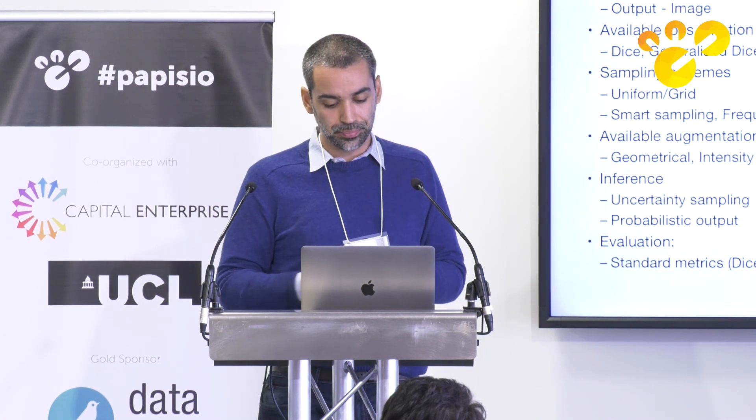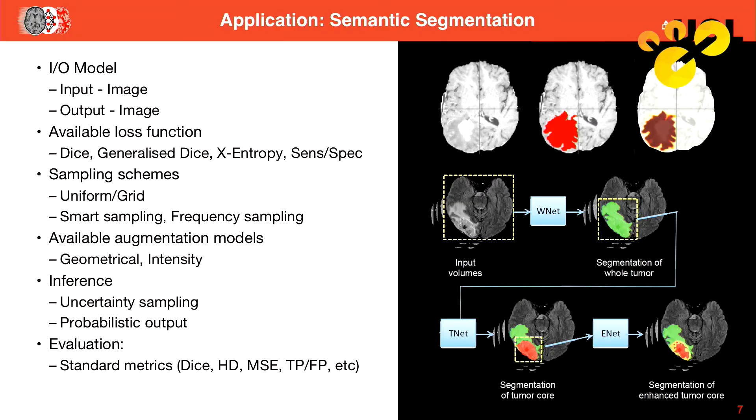For semantic segmentation, your input is an image and your output is an image. In terms of loss functions, you have things specific to medical imaging like DICE scores and sensitivity-specificity metrics, because you might want systems to not miss tumors. The way you sample can be made quite smart in terms of how frequencies of different types and sizes of structures contribute to the capacity and nonlinearities encoded in your model. When doing inference on new data, you might want to know how uncertain you are about your boundaries — you might want a probabilistic outcome. All of this is essential in medical care because if you ask ten clinicians to contour the same image, they will do it differently. Uncertainty has to be there.